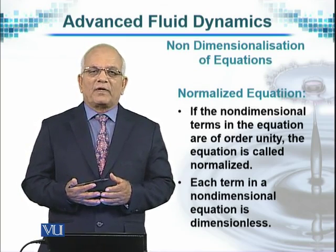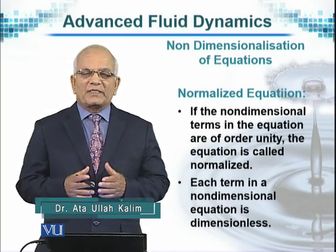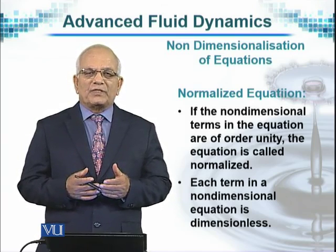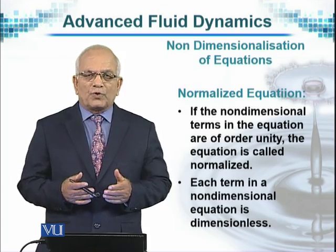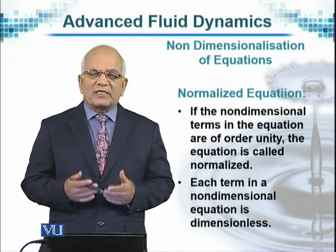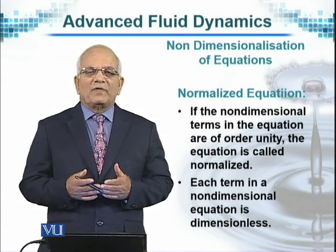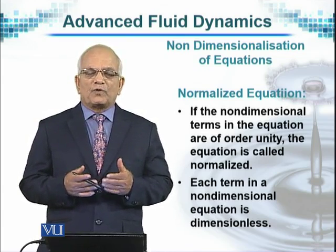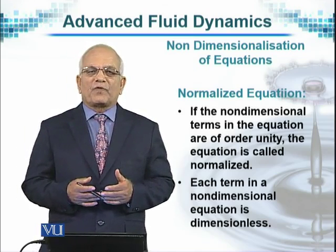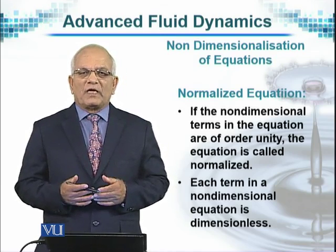We have already discussed that the dimensions of equations should be the same — each term occurring in the equation of motion should have the same dimensions on each side of the equation. If it is not so, there is an error somewhere. Beyond that, we come to another step: normalizing them. By normalizing, we have a uniform dimension or no dimension at all — just a number. For that, we divide each term of the equation by certain variables that are appropriate to the fluid flow as well as to the equation.